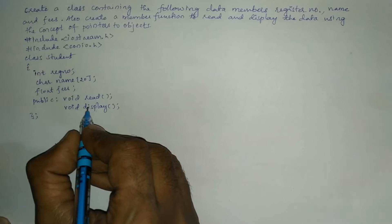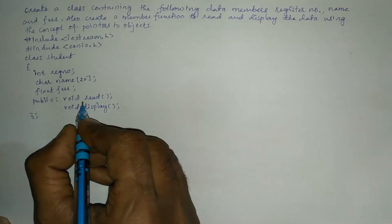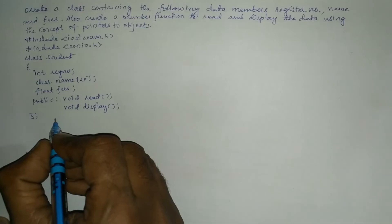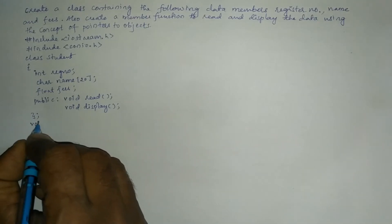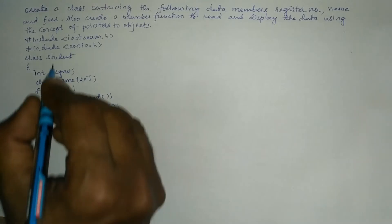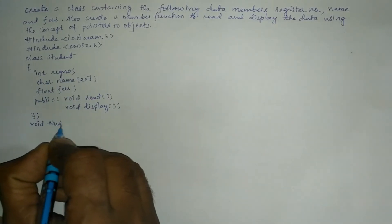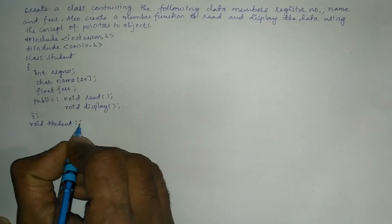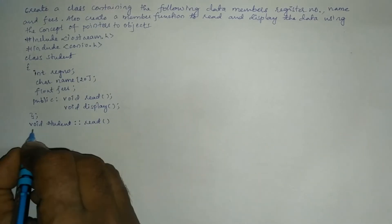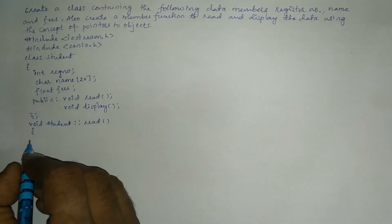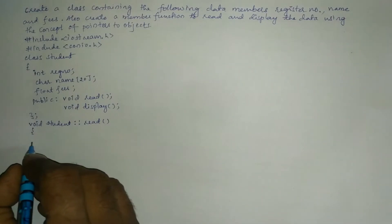Both user-defined functions are declared inside the class definition, but we need to define them outside the class using the scope resolution operator. We write the return type void, then the class name, the scope resolution operator, and then the function name read with a curly open brace.